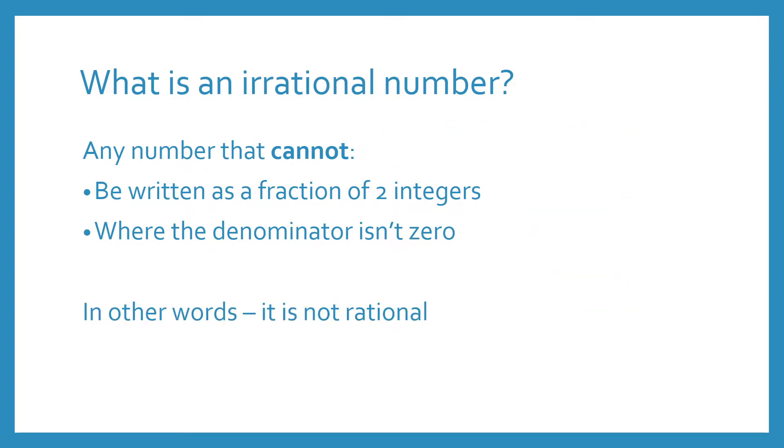So an irrational number is any number that can't be written as a fraction of two integers, where the denominator isn't zero. In other words, it's the opposite of what a rational number is.